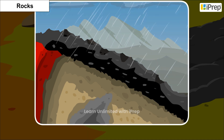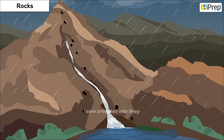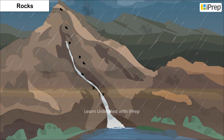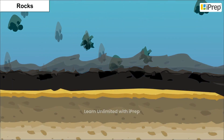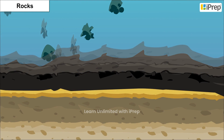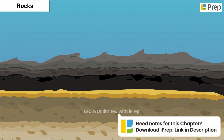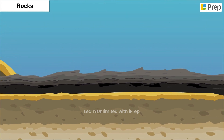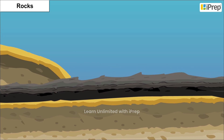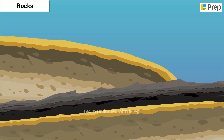When the igneous rocks crack or fall against each other, they form sediments that are moved by air or water over a period of time. These sediments, when compressed and hardened, form sedimentary rocks such as sandstone.